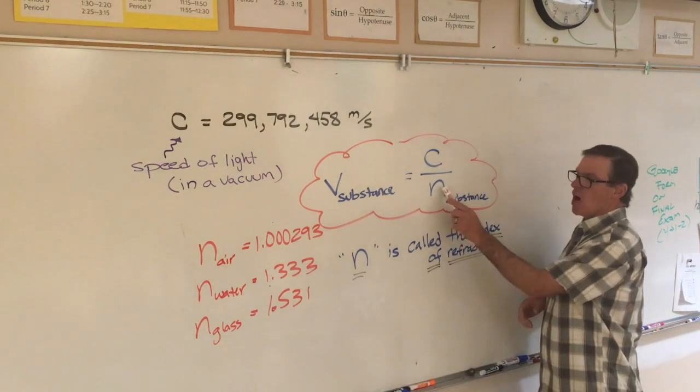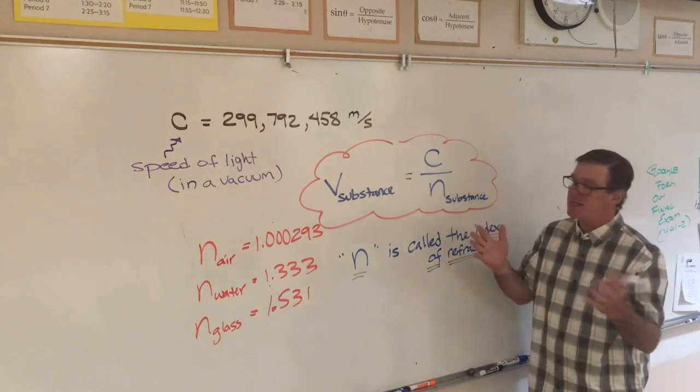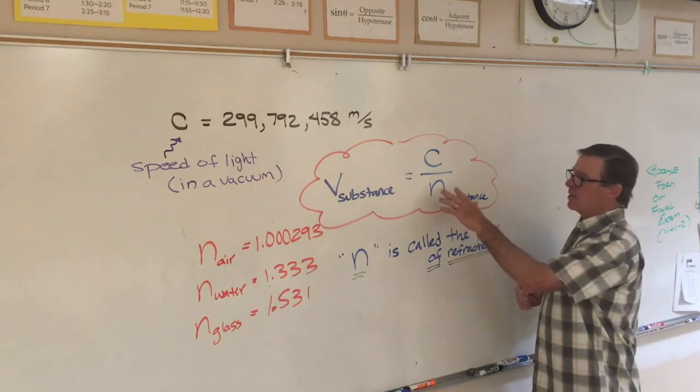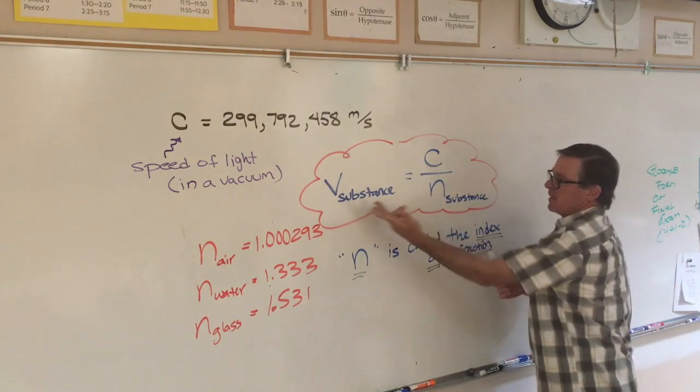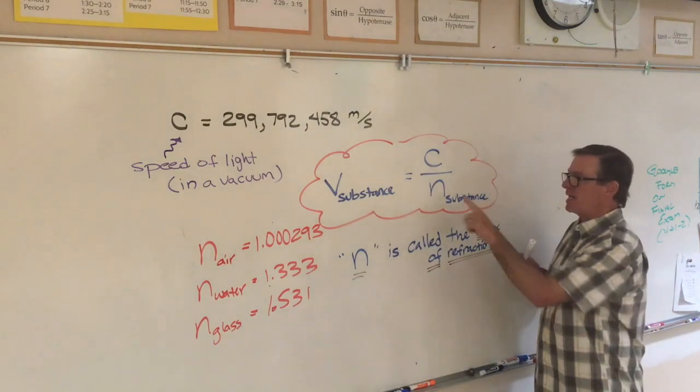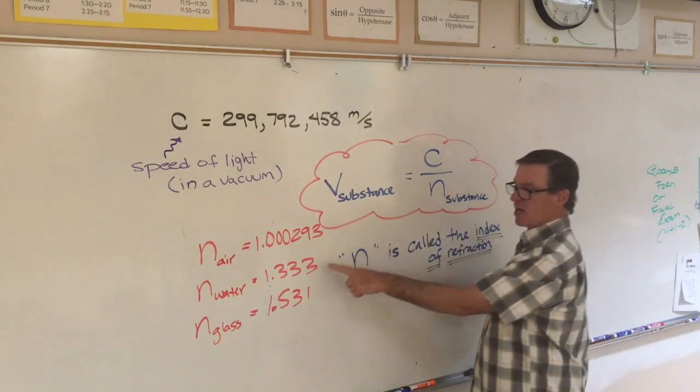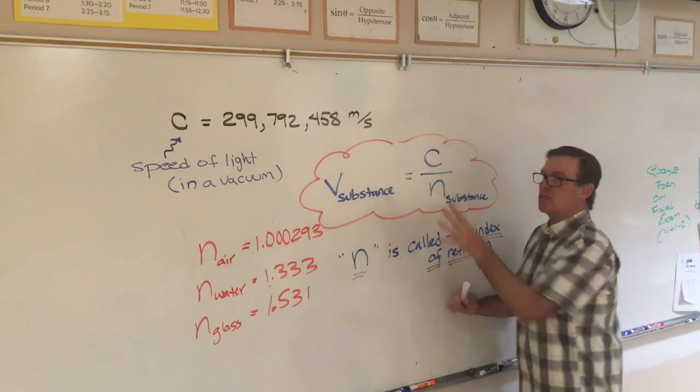So what that means is, if this is 1, and for a vacuum N is 1, exactly 1, then C over 1 is C, and the speed of light is C in a vacuum. But in any substance whose index is greater than 1, light slows down.